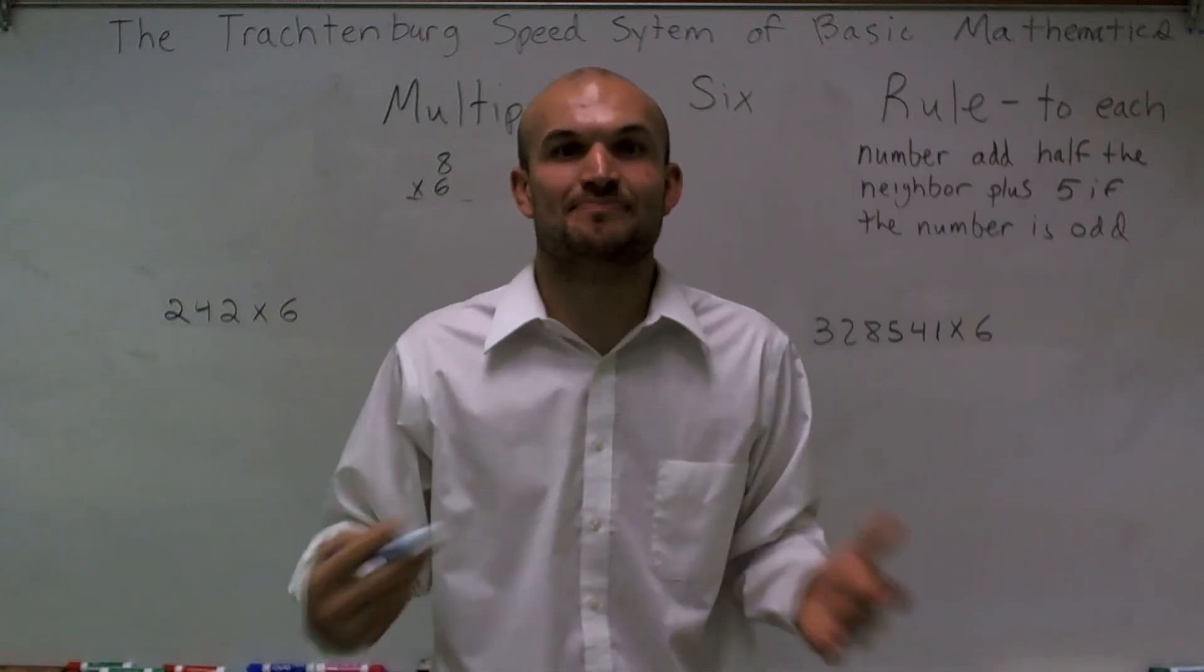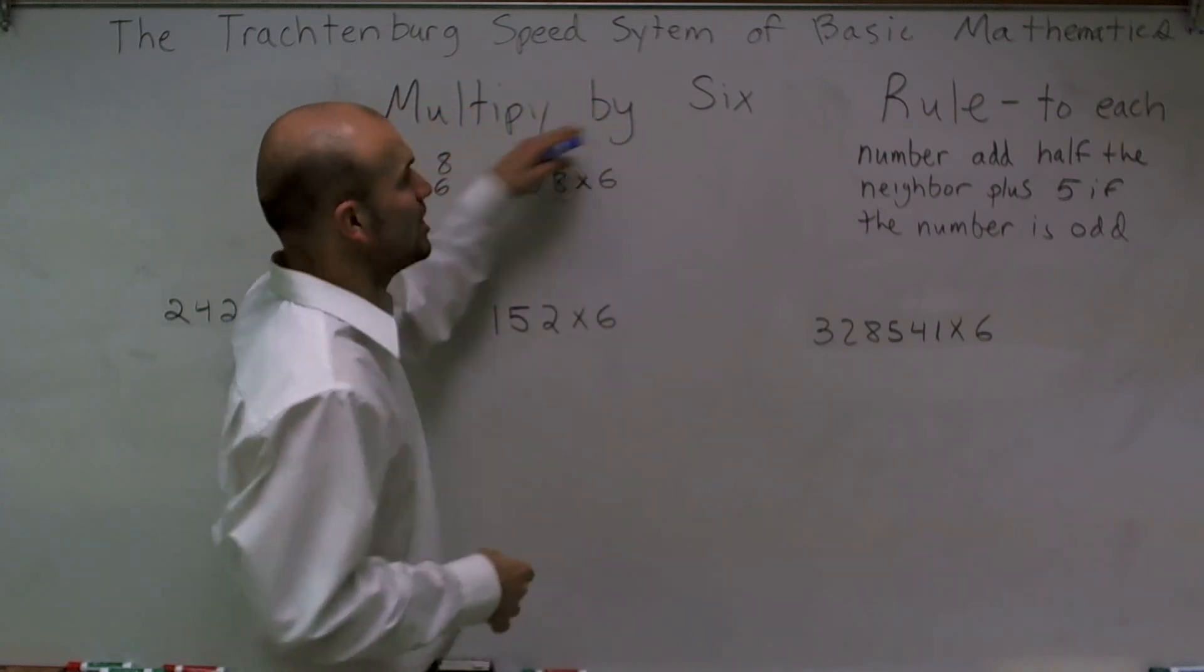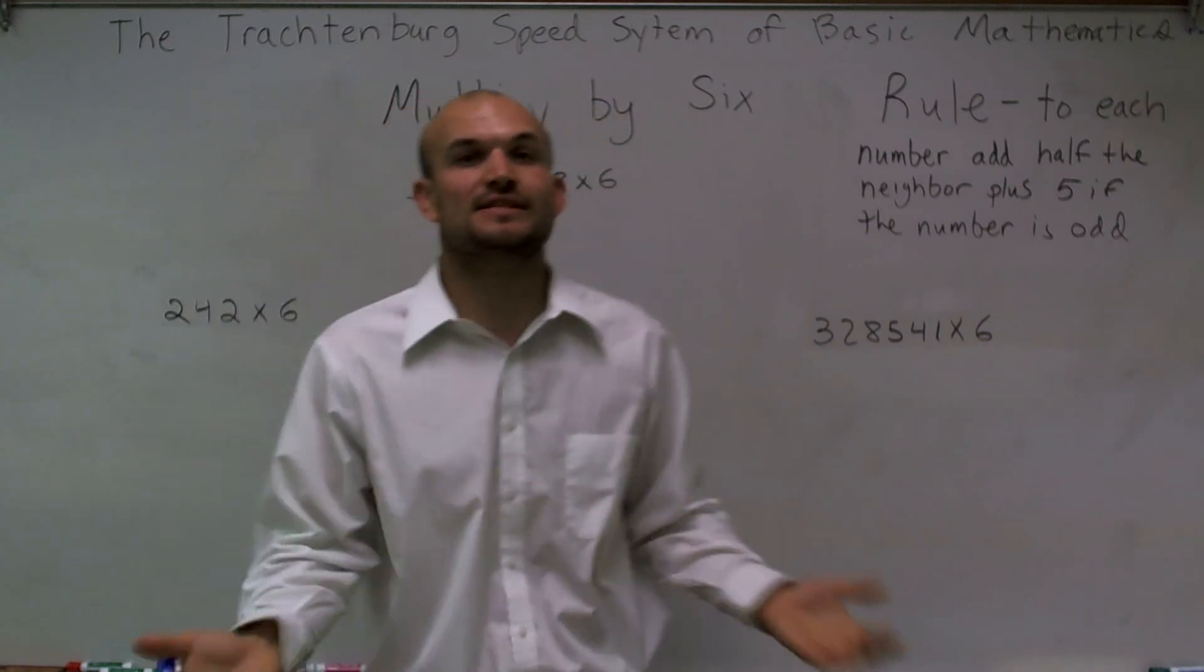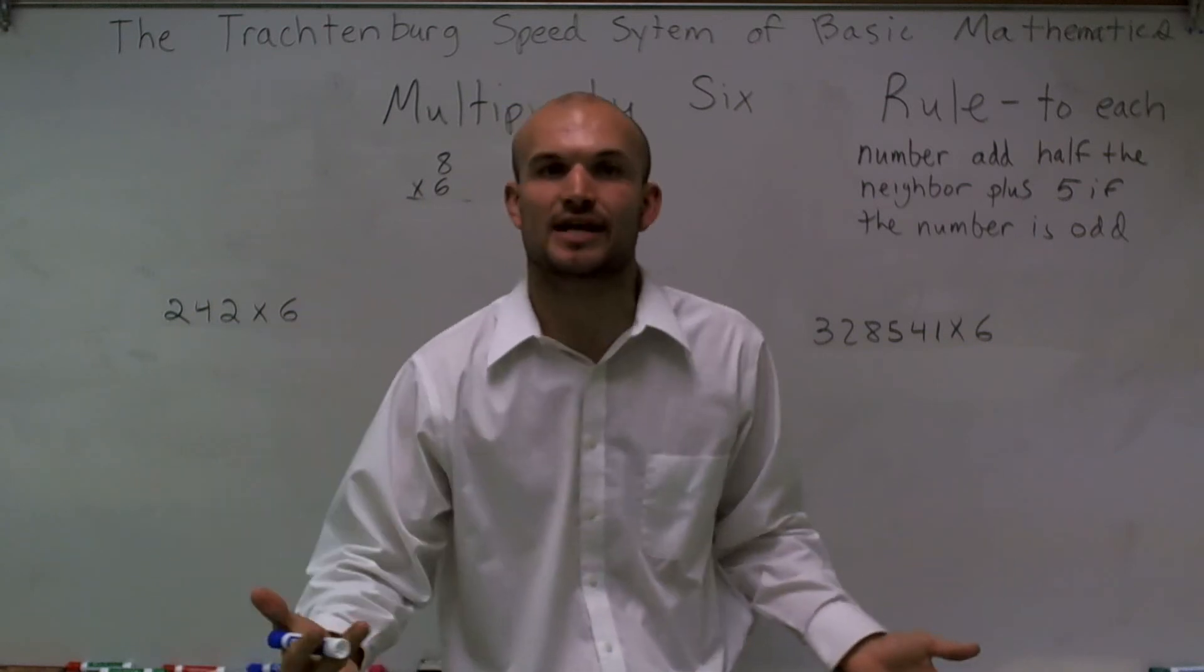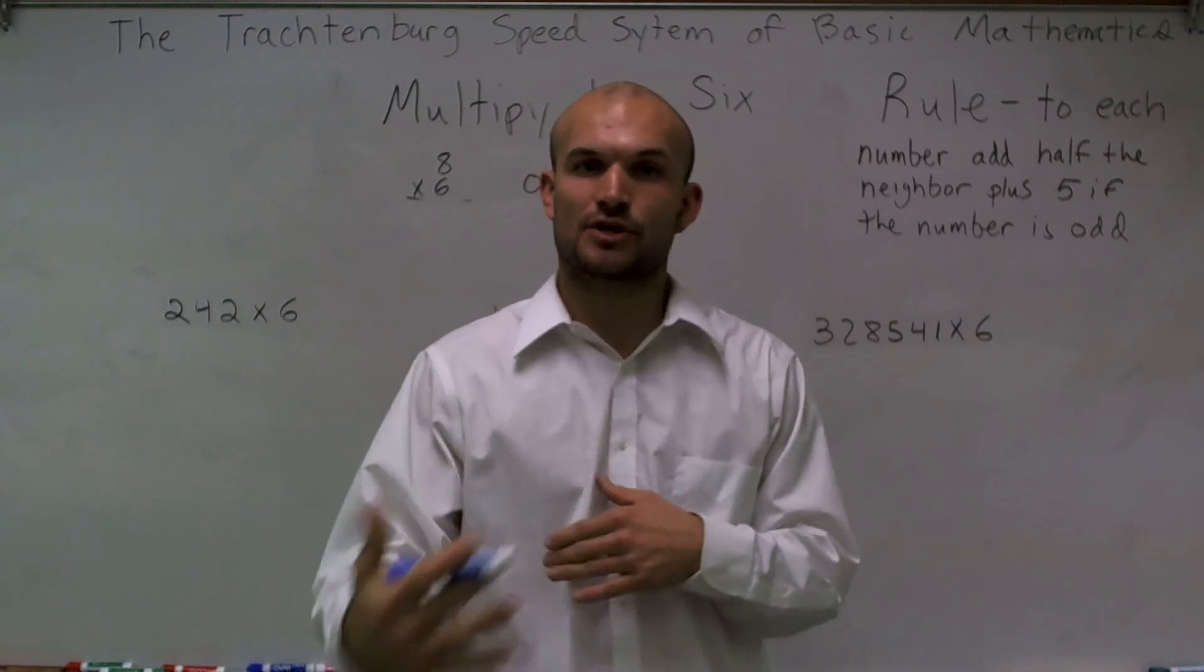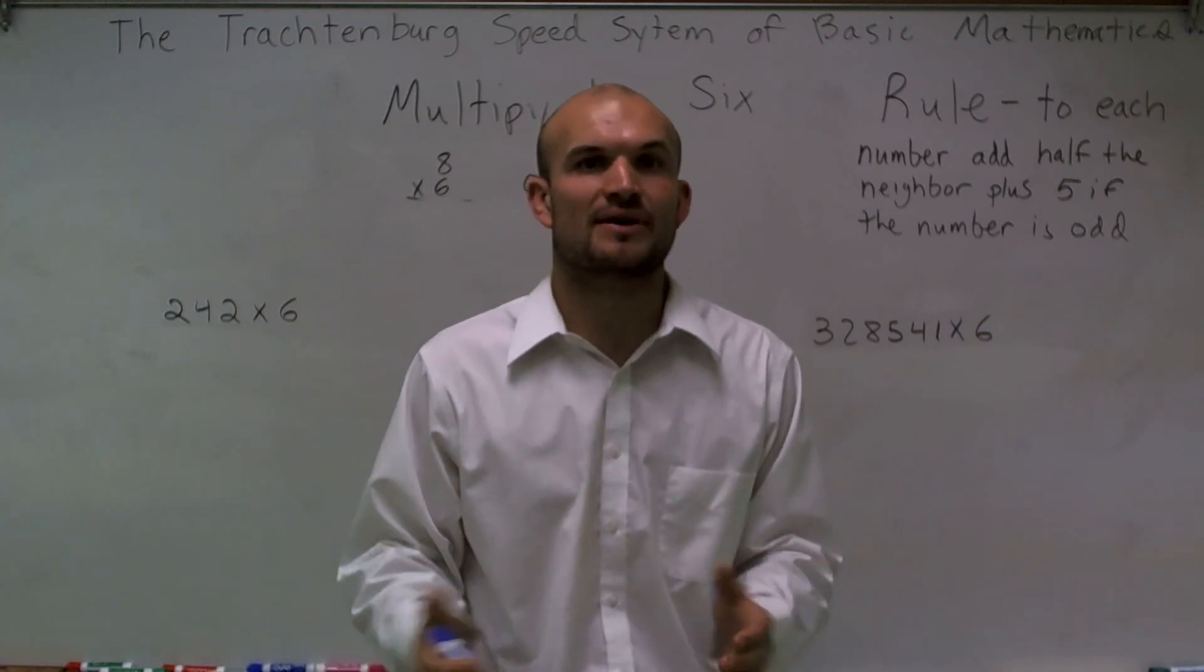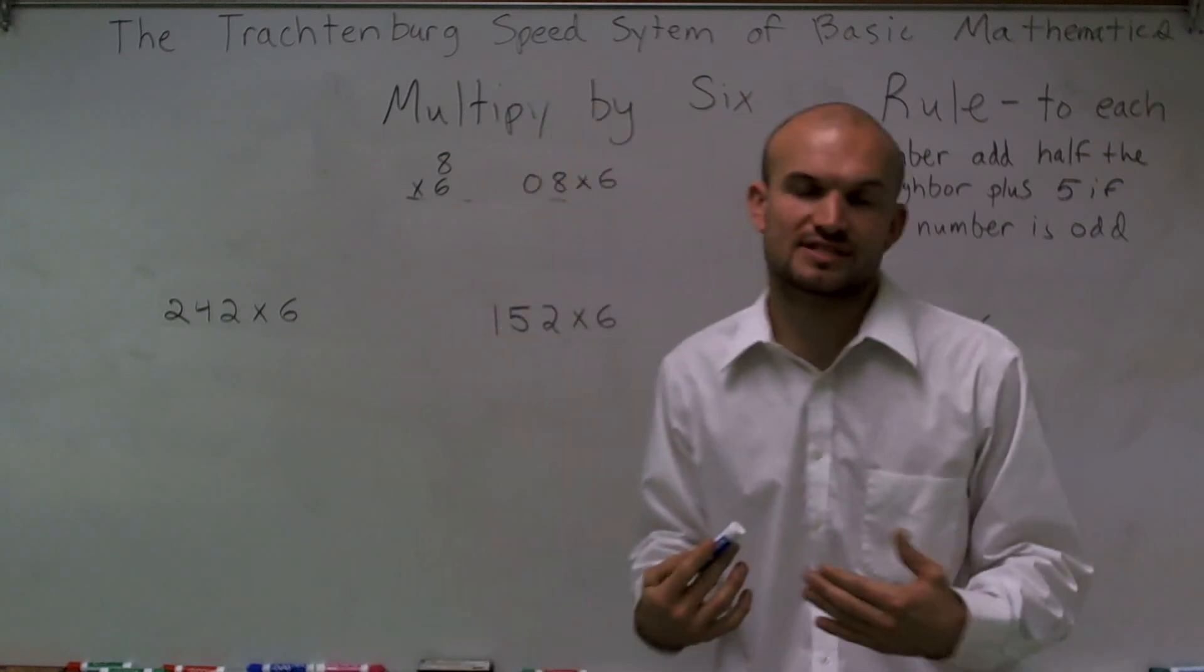Welcome to the Trachtenberg Speed System, a speed system of basic mathematics. Today, we're going to learn the rule to multiply by six. If you've seen the previous videos, the rule of six and this basic method is just like everything else we've done. If this is your first video, I'm going to go through it slowly and step by step, and try to cover as many bases so you can see where we're coming up with this system.